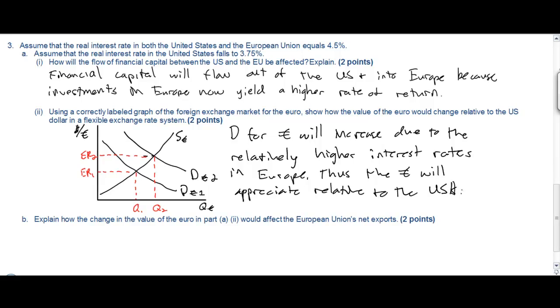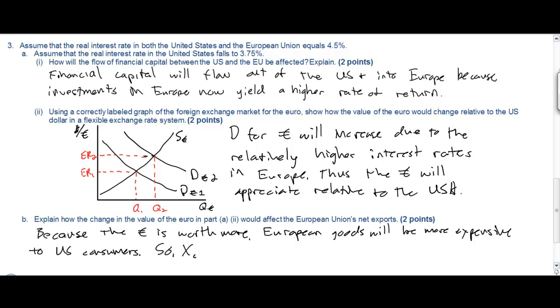The last question says explain how the change in the value of the euro will affect European Union's net exports. Now we've just described a shift towards surplus in Europe's financial account. Naturally this will lead to a shift towards deficit in the current account. The stronger euro will make European goods less attractive to American consumers causing Europe's exports to fall. Therefore Europe's net exports will fall and the trade balance will move towards deficit.